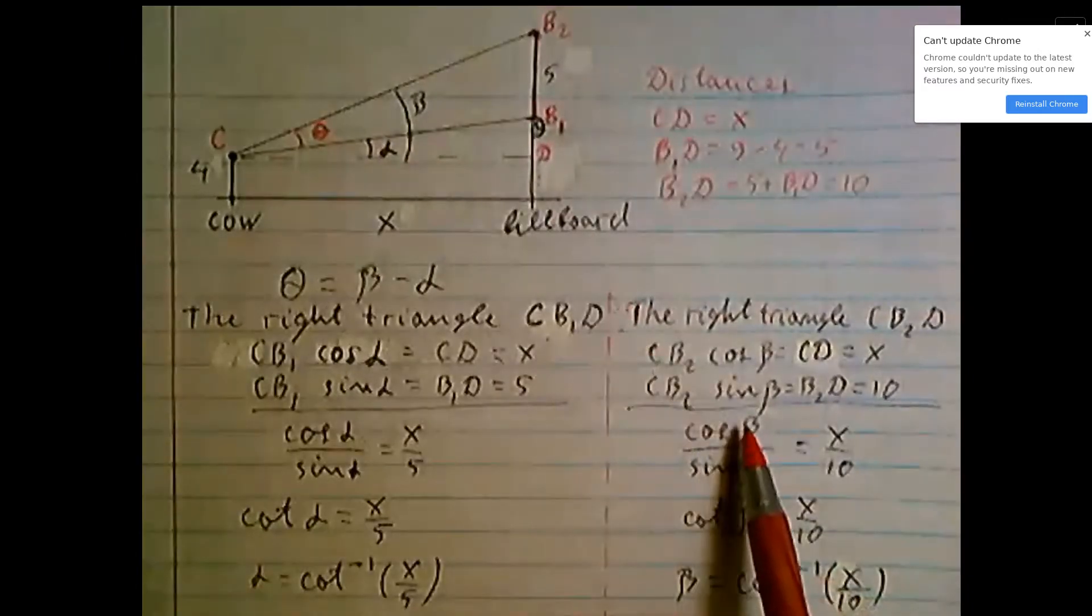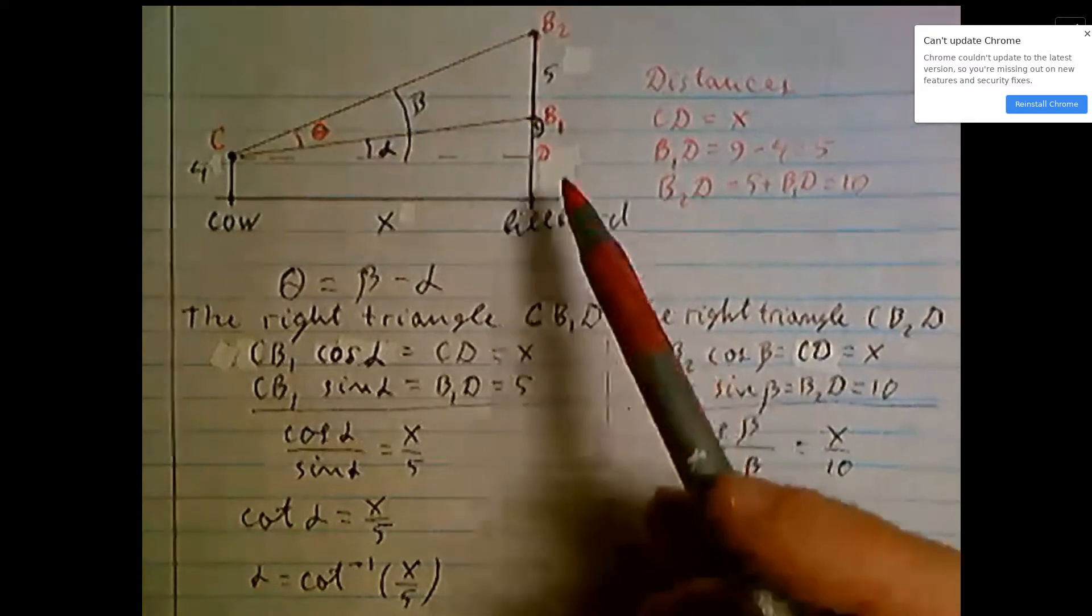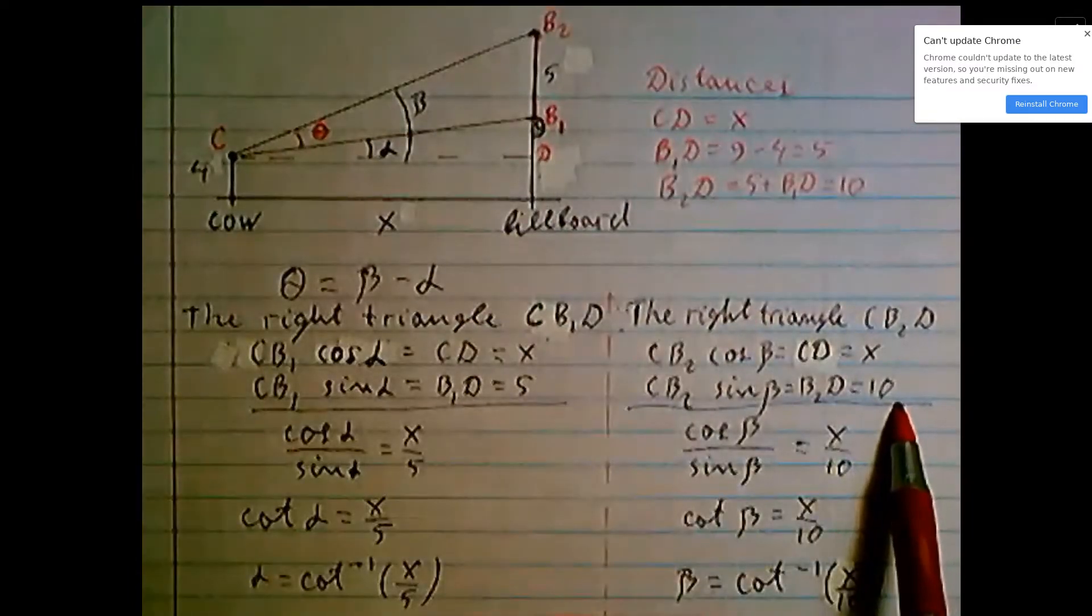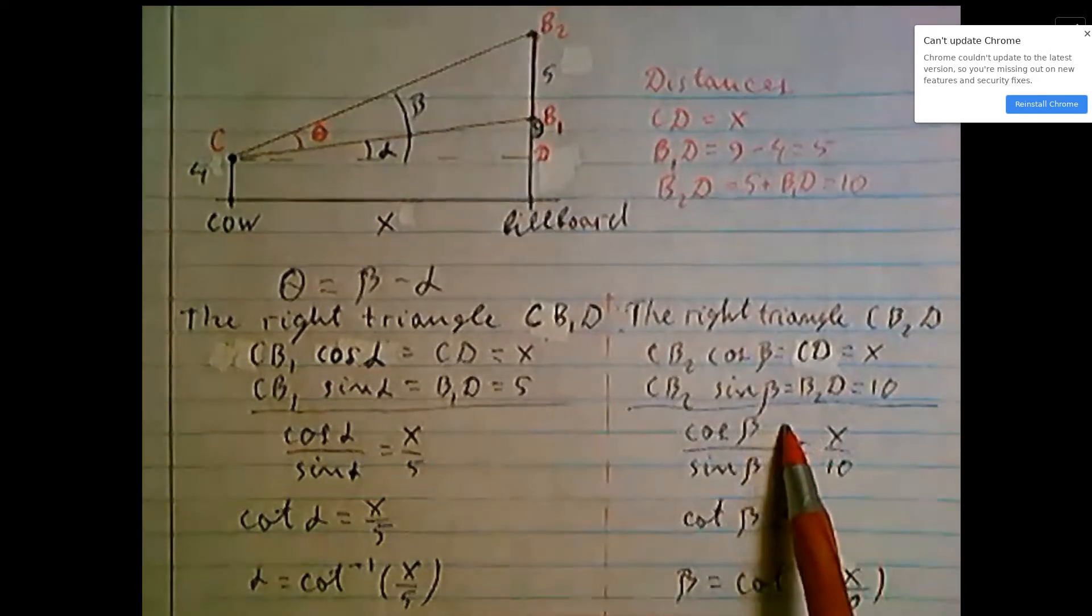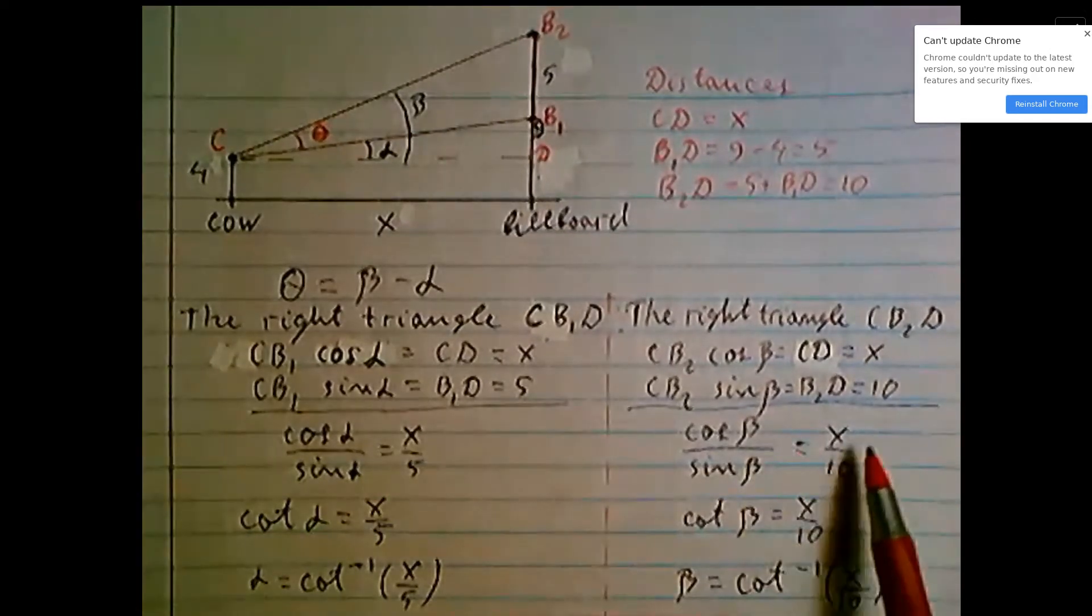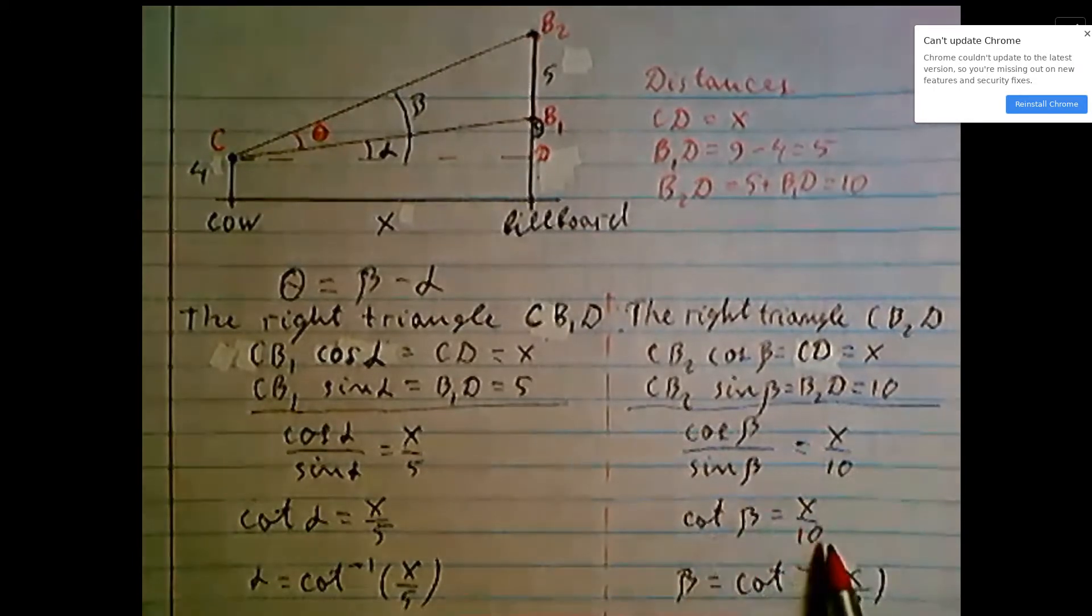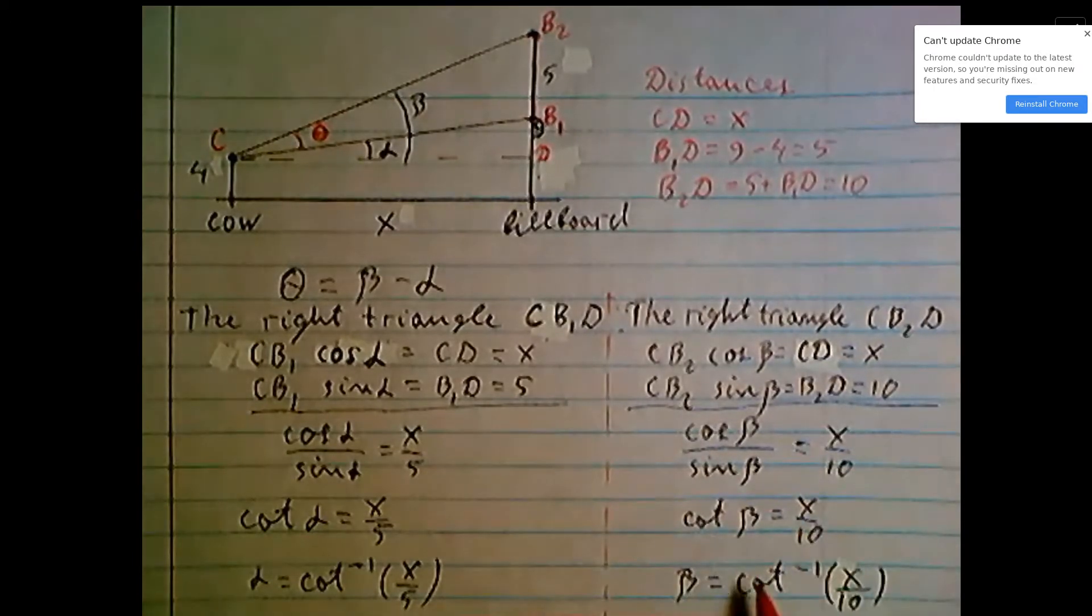Hypotenuse CB2 times sin beta equal leg B2D or equal 10. Cosine beta over sin beta, if you divide, it will be x over 10. So cotangent beta equal x over 10, beta is inverse cotangent of x over 10.